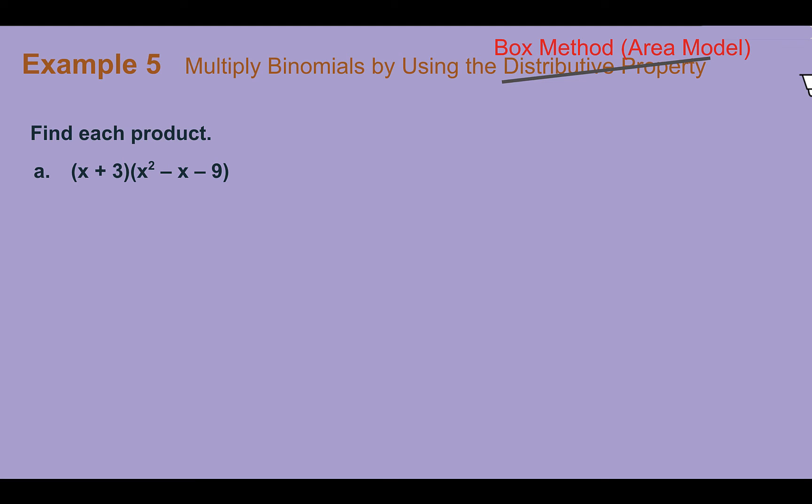Apply example 5. Multiply binomials by using, and then on this one, instead of the distributive property, I'm going to show you a different method called the box method, or the area model. And if you're familiar with Punnett squares in science, used in genetics, then this method might be fairly simple for you.